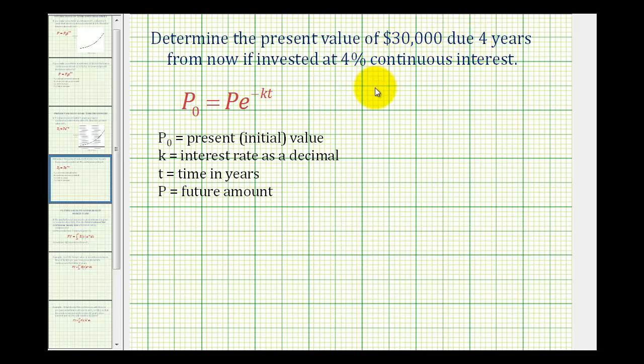This is called the present value. And here's the formula for present value. It looks very similar to the future value formula, and I'll show you why that is in just a minute. These variables represent the exact same thing as they did in the future value formula, where P_0 is the present or initial value of the investment account, k is the interest rate expressed as a decimal, t is the time in years, and P is the future amount.